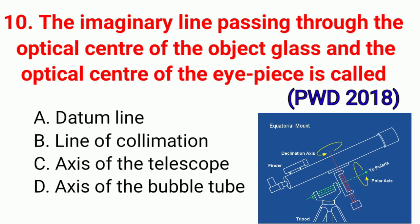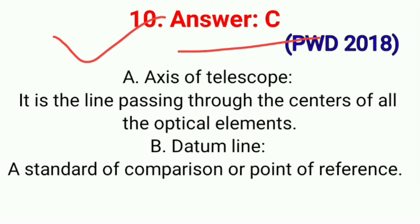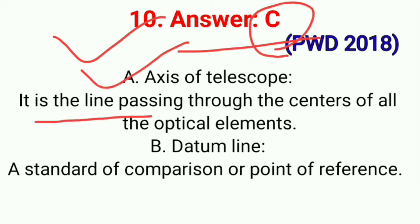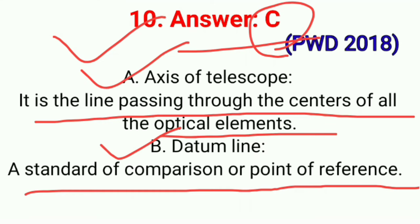Question No. 10. The imaginary line passing through the optical center of the object glass and the optical center of the eyepiece is called. Correct option C: Axis of Telescope. It is the line passing through the center of all optical elements. Correct option C.